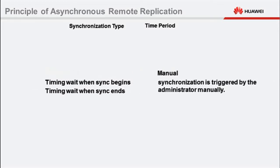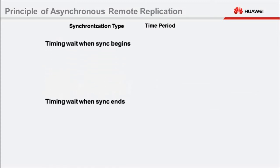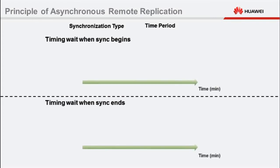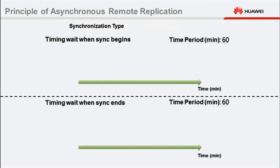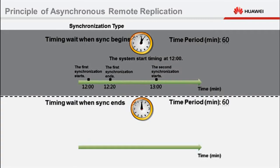In manual mode, synchronization is started by an administrator. For timed wait when synchronization begins: if the initial synchronization starts at 12 o'clock PM, the synchronization process takes 20 minutes, and the synchronization period is 60 minutes, the storage system starts timing when the initial synchronization starts. Completion of the synchronization does not affect the timing. At 1 o'clock PM — 60 minutes after the initial synchronization starts — the storage system starts the second synchronization. The period from 12 to 1 o'clock PM is one synchronization period.